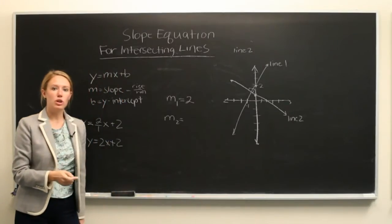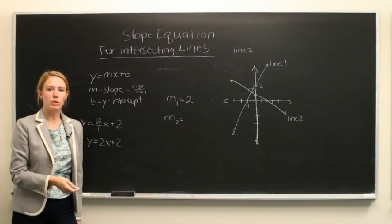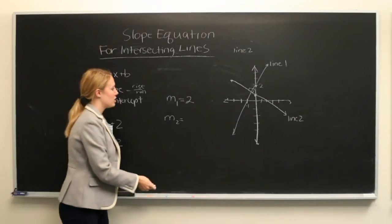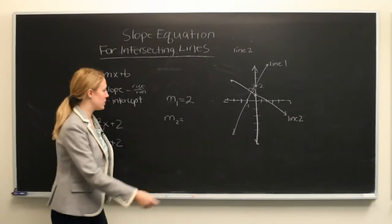because the slope of the second is equal to what we call the opposite reciprocal of the first. So opposite just means we put a negative sign here,